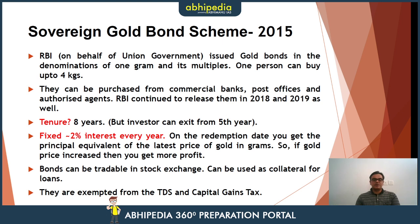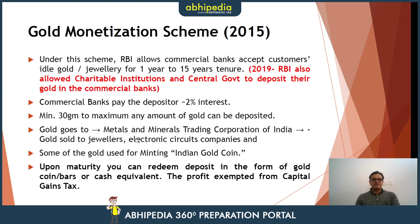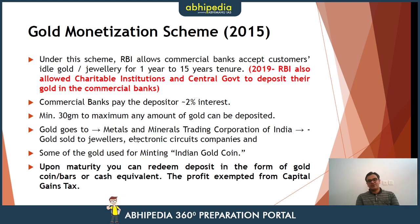Next is the Gold Monetization Scheme 2015. Under this scheme, RBI allowed commercial banks to accept customers' idle gold or jewelry for a tenure of one to fifteen years. In 2019, RBI also allowed charitable institutions and the central government to deposit their gold in commercial banks. This scheme offers 2% interest and the minimum amount that can be collected is 30 grams. The gold goes to MMTC — Metals and Minerals Trading Corporation of India — and is then sold to jewelers or electronic circuit companies.